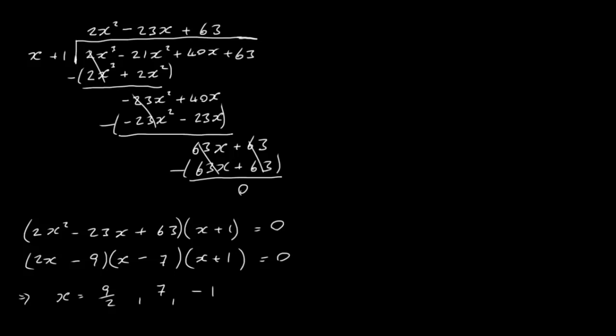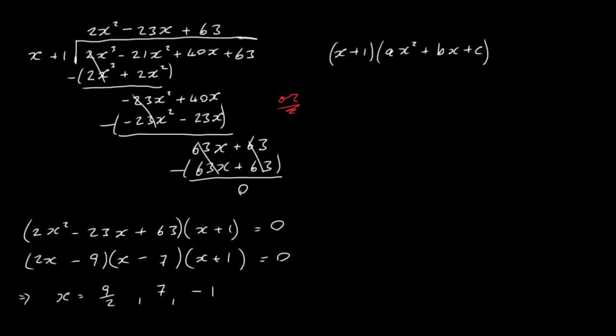There is another way of doing this instead of long division — some people don't like the long division approach. You can use a coefficient-matching method. We know x plus 1 multiplied by some quadratic ax squared plus bx plus c should give us our original cubic, 2x cubed minus 21x squared plus 40x plus 63.